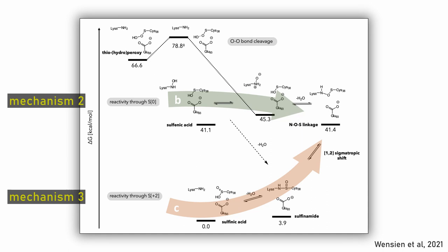No concerted O-O bond breakage with a minor nucleophilic attack like in the first mechanism has been observed. Also, sulfenic acid is too stable, so that no further reaction would occur. Therefore, the mechanism must involve a lower oxidation state of the cysteine.